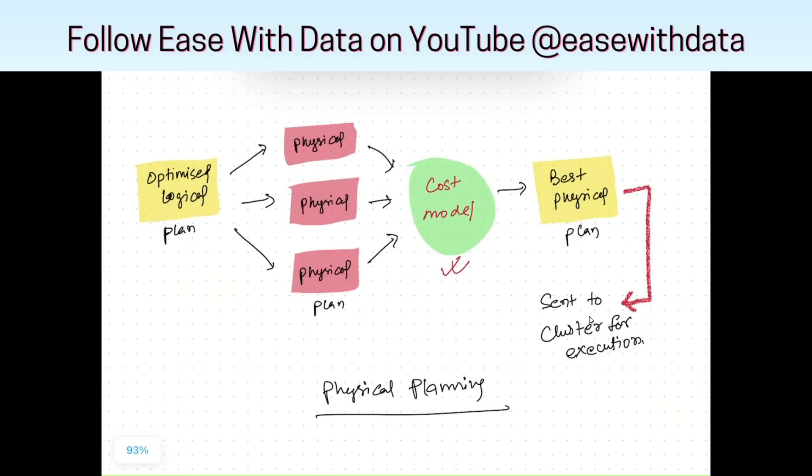Once the cost is validated, Spark selects the best physical plan and that physical plan is sent to cluster for execution. Once the executor receives the physical plan, they run that physical plan against the data partitions and that is how the whole execution for Spark works.